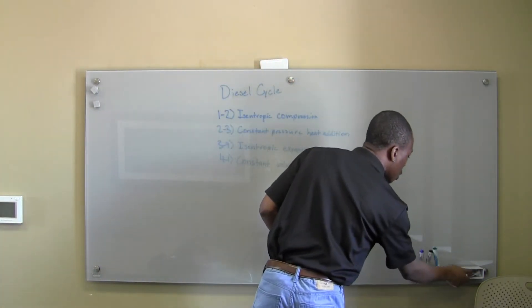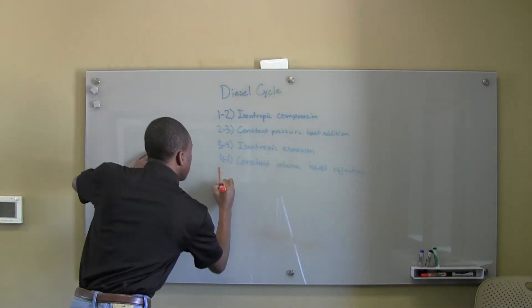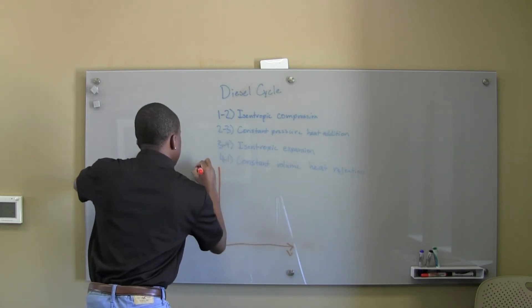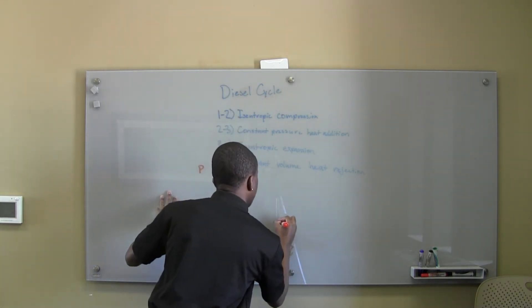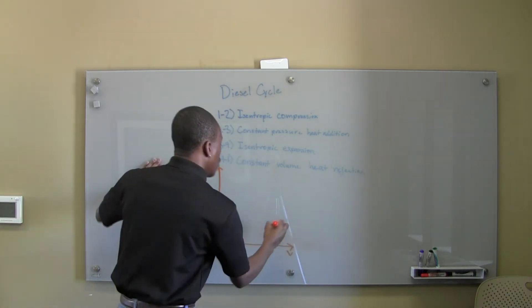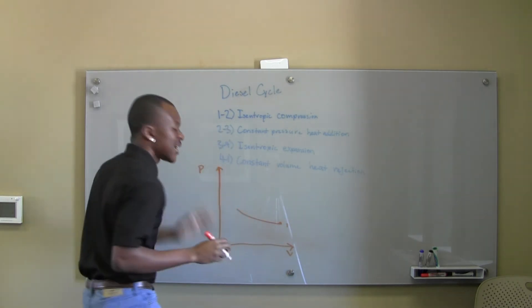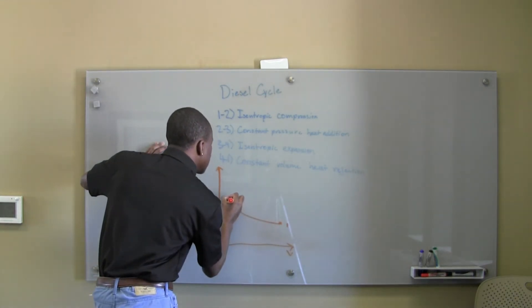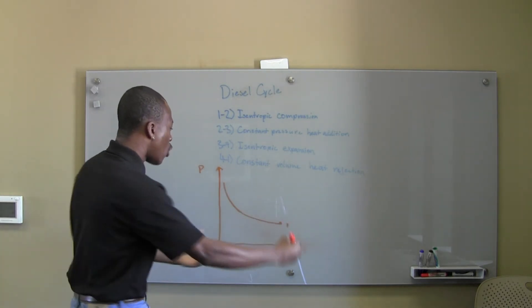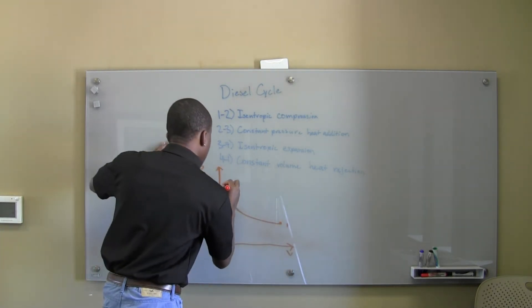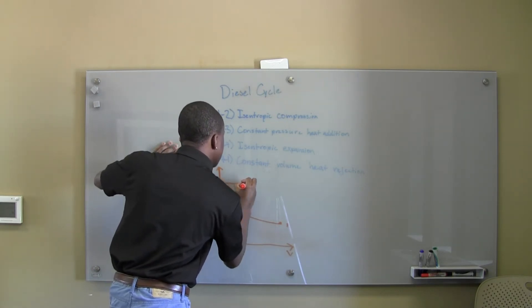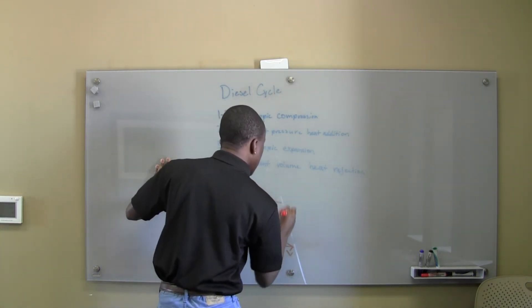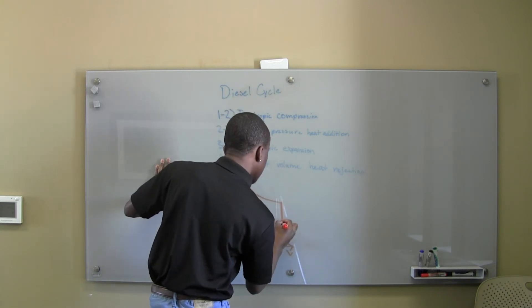Let's take a look at the PV diagram for the diesel cycle. We end up getting something that looks like this, starting at step one. You might say that looks similar to the Otto cycle graph, but with the diesel cycle we go past the point we had with the Otto cycle. Then constant pressure, we go like this, and then from three to four we come back, and then constant volume closes it back. That's the path from one, two, three, and four.